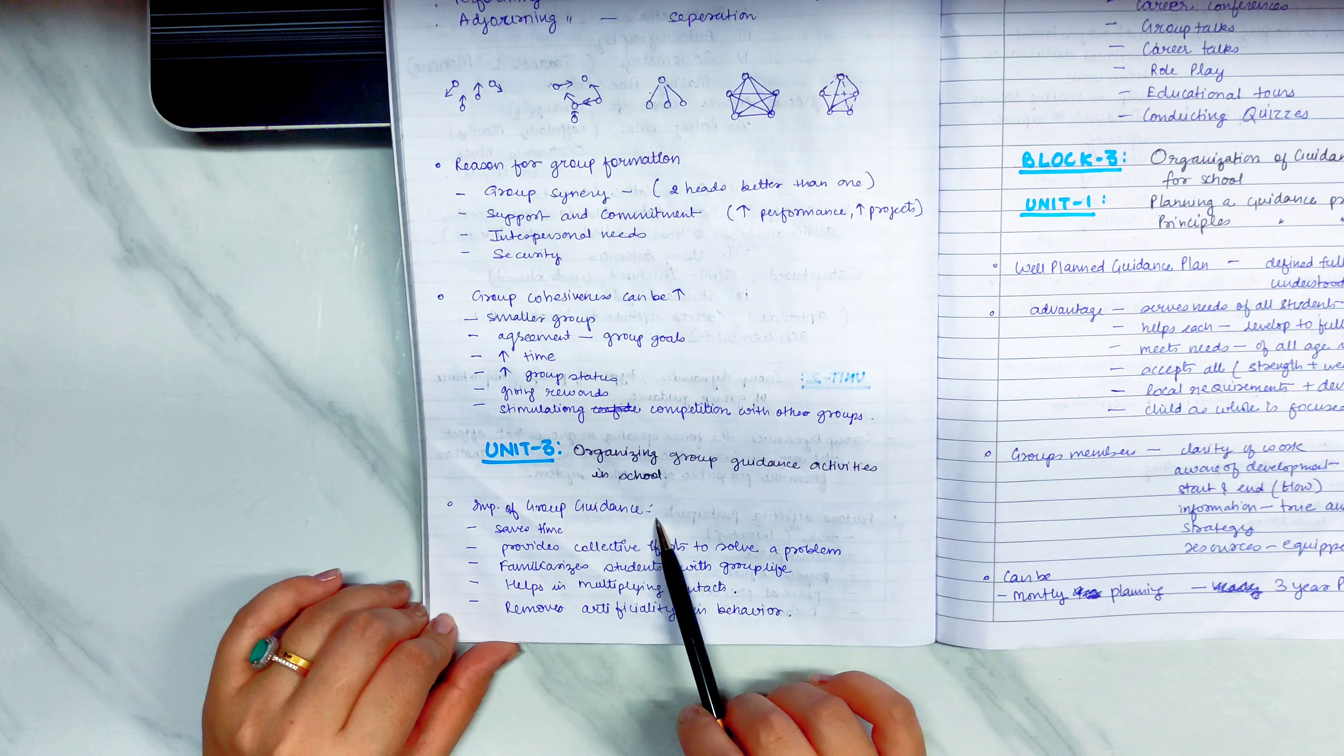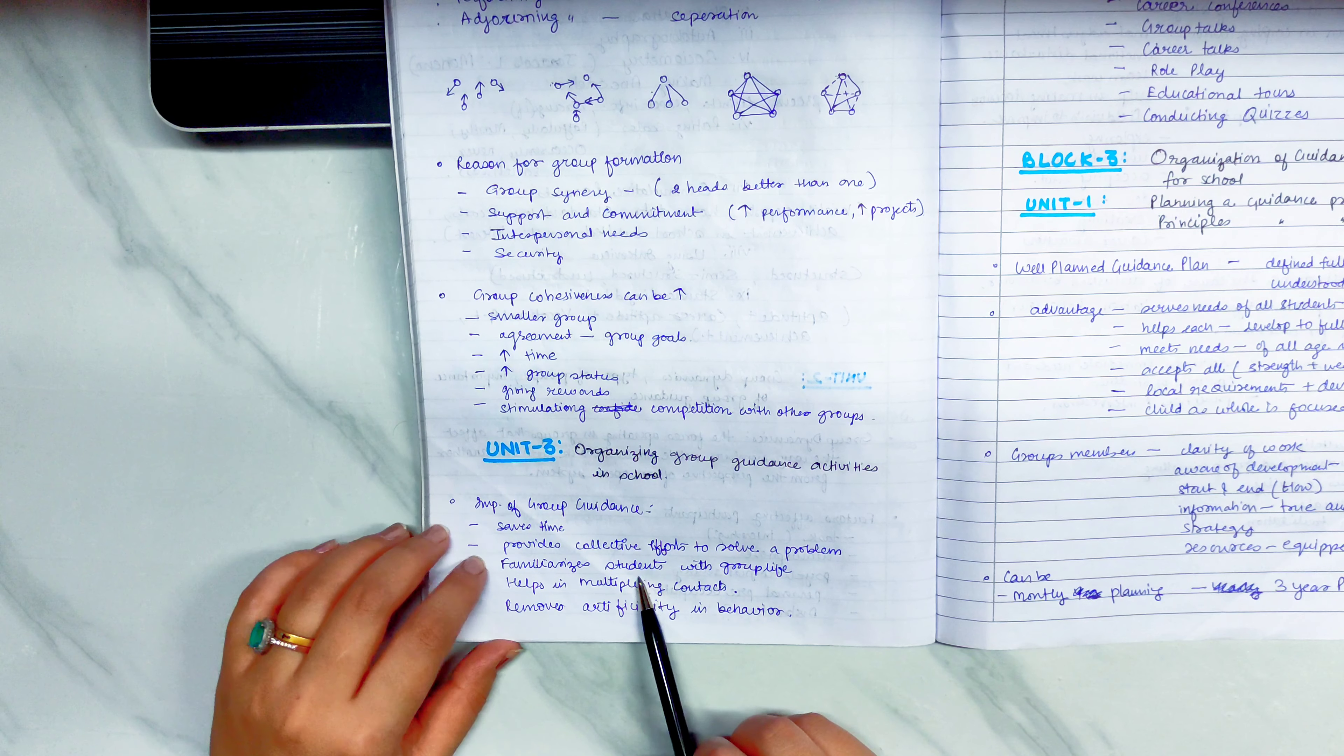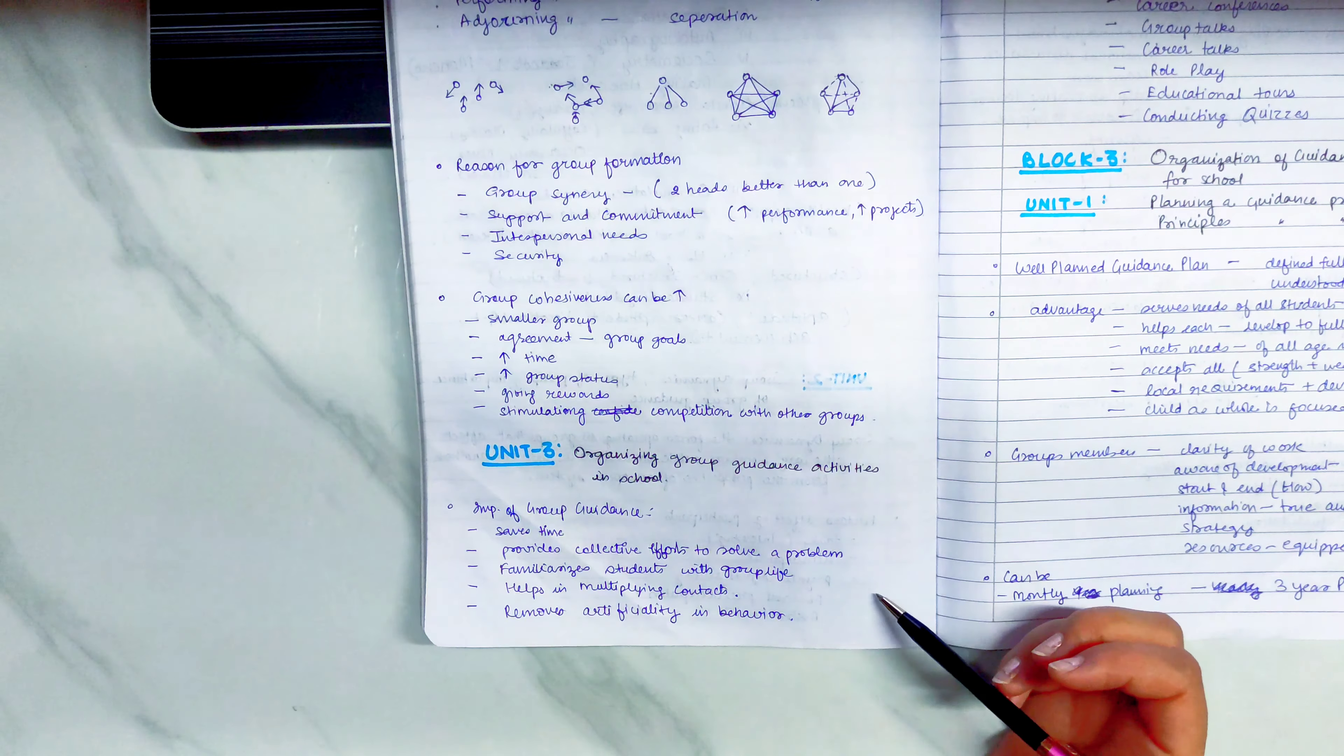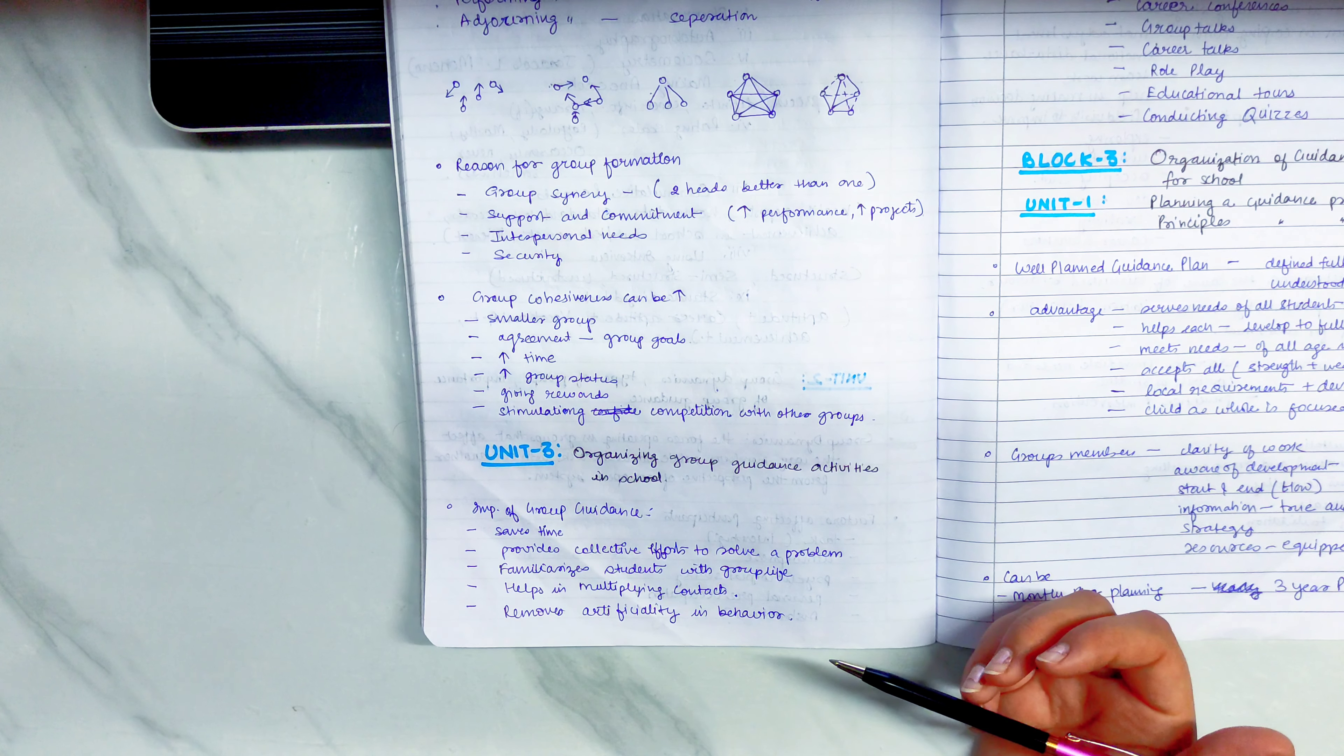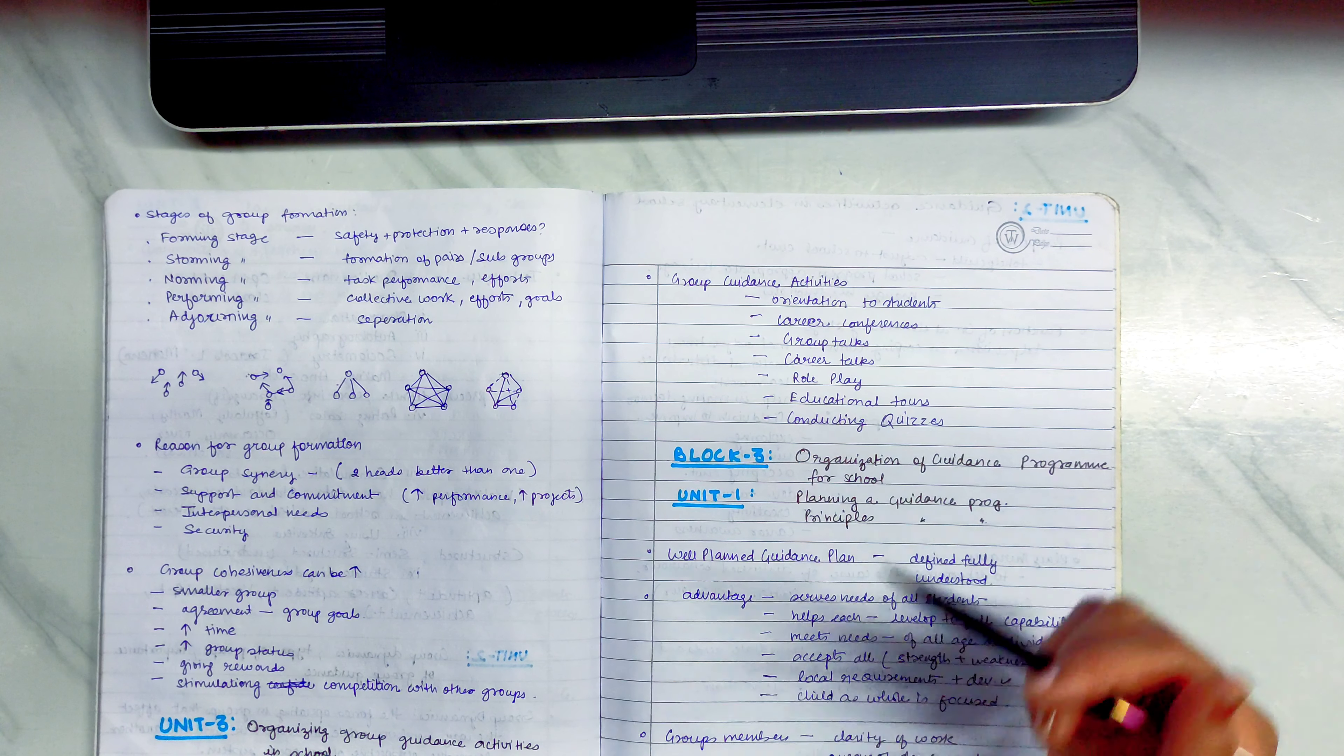Unit 3 is organizing group guidance activities in school. Importance of group guidance: it saves time, it provides collective efforts to solve a problem, familiarizes students with group life, helps in multiplying contacts, removes artificiality in behavior.